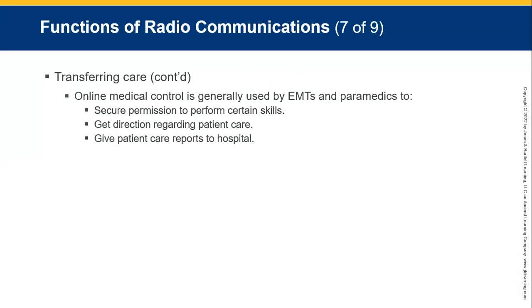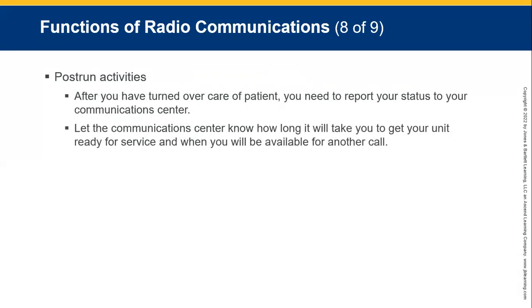Online medical control, generally used by EMTs and paramedics, is used to secure permission to perform certain skills — we have to have permission before we can touch the patient — and to get direction regarding patient care if we need to refer to someone with higher knowledge. It's also used for patient care reports to a hospital; certain emergency services have direct links to hospitals and send information back and forth regarding the patient. Post-run activities: after turning over patient care to higher trained help, report your status back to the communications center — report back on duty or standing down, getting fuel, cleaning the ambulance. Let the communications center know how long it will take to get the unit ready for the next service, and as soon as you are available, report that you are ready to take another call.